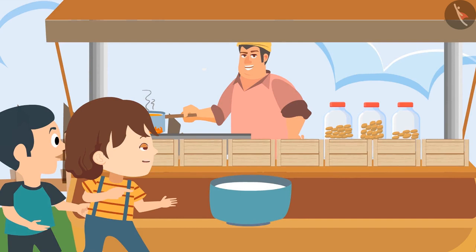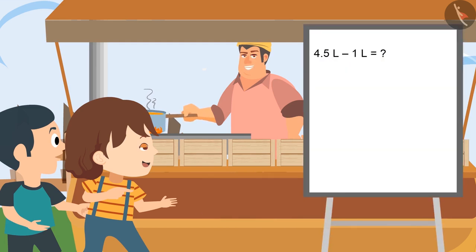Daddy, how much milk have you used for making tea? Son, I have used one litre of milk. Okay, now tell me — if I have used one litre of milk out of four and a half litres, how much milk is left? After taking out one litre, we are left with 3.5 litres of milk. Very good, Pinky.